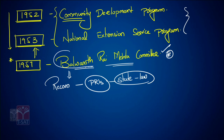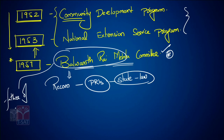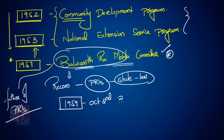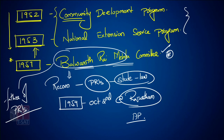So Balavantharai Mehta is called the father of Panchayati Raj Institution in India. Keeping the recommendations of the Balavantharai Mehta Committee, in 1959 on October 2nd, Rajasthan became the first state to constitute a Panchayati Raj Institution, followed by Andhra Pradesh. Very, very important for the exam.